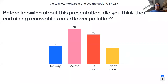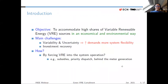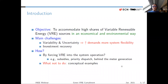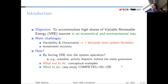So how to accommodate high shares of variable renewable energy sources in an economical and environmental way? I will show some conceptual examples to illustrate what is going on. I want to show things the system shouldn't do, and then show a case study we did at TNO using the PITS power system model — one example of things that are better to do.